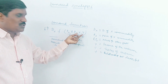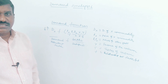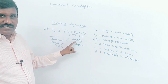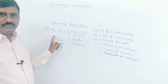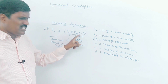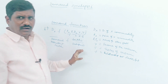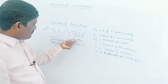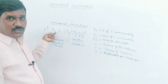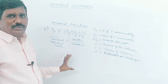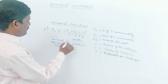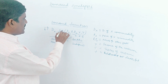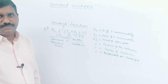Dx is the dependent factor. Px, P1, P2, Y, and T are the independent factors. If any changes in factors, there is a change in demand. If one changes, two changes, three changes — any change in factors leads to a change in demand. This is the relationship between demand and demand factors, which is called the demand function.